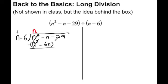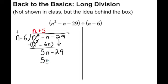We then take this and subtract it. You'll notice that the leading term will always cancel. The trick here is we have negative n minus negative 6n — subtracting the negative is where things get tricky. Then we repeat the process: what times n gives me 5n? The answer is 5. We multiply through again and get 5n minus 30, leaving a remainder of positive 1.